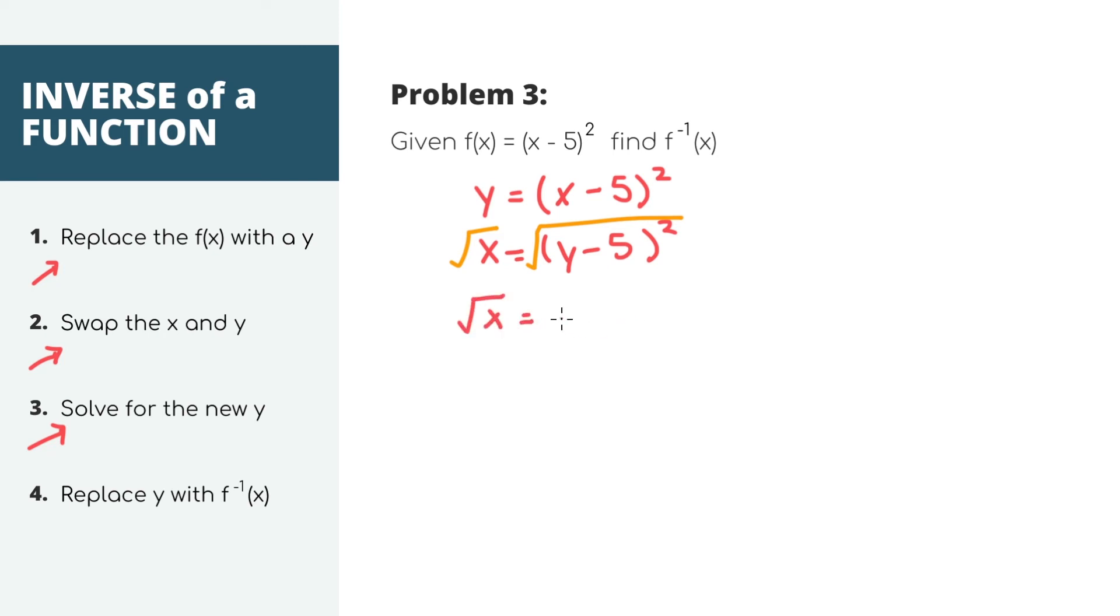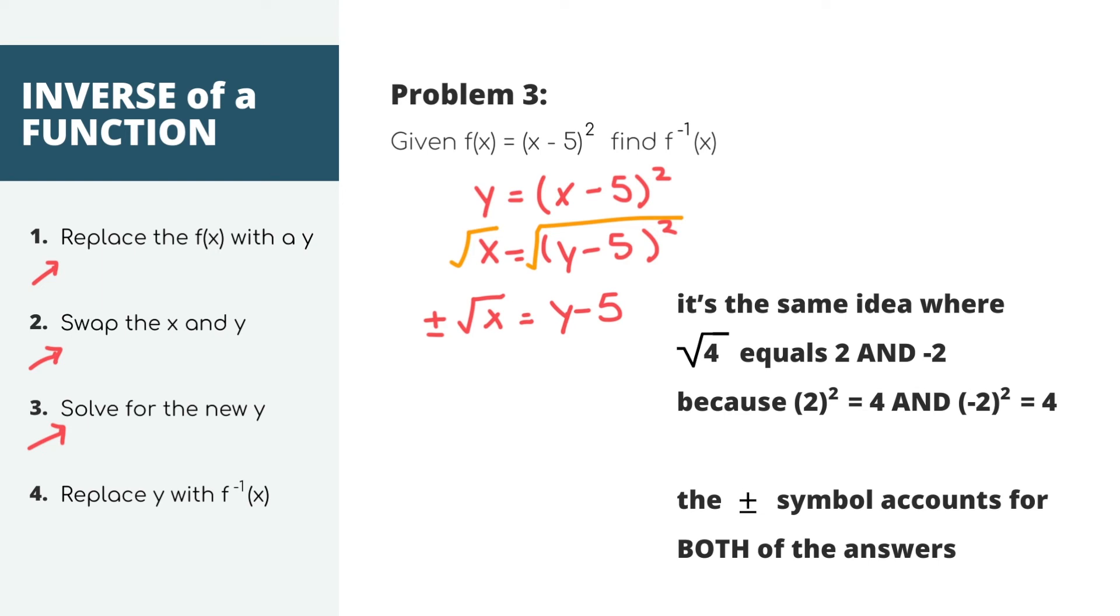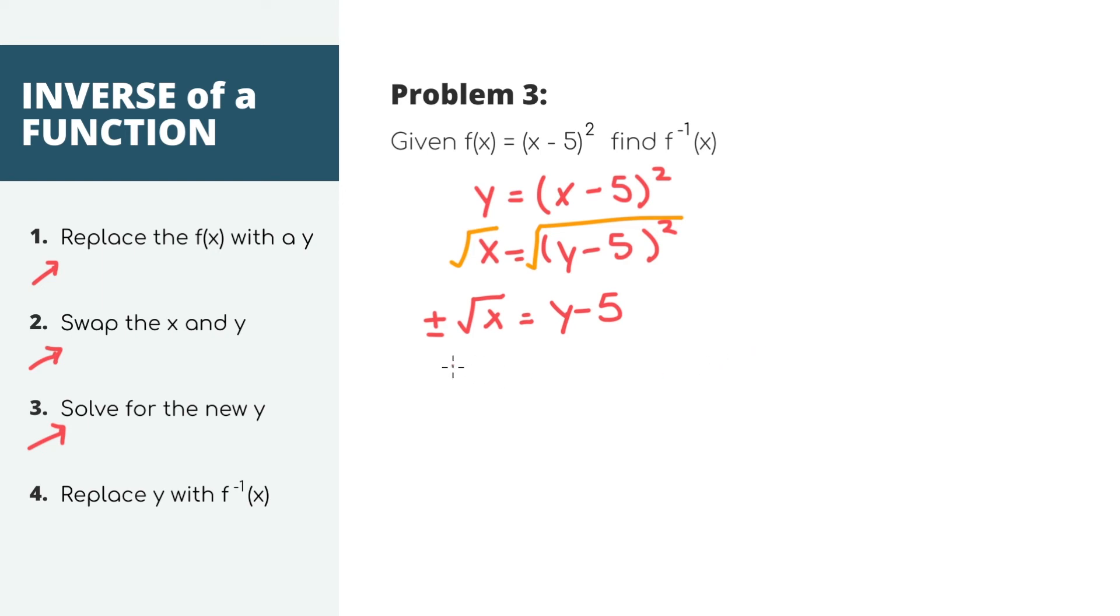Now I did want to point out that when you take the square root of a number, you have to add the plus or minus sign. If this doesn't really make sense to you, pause here to read the explanation. But the plus or minus means that there are actually two solutions that we need to account for. Positive x and negative x. So now we have plus or minus the square root of x equals y minus 5. We're almost there except for this minus 5. So to get rid of it, we need to add 5 to both sides. And finally, let's replace the y with the inverse of f of x. The inverse of f of x is plus or minus the square root of x plus 5.